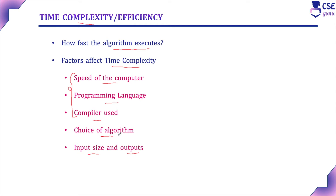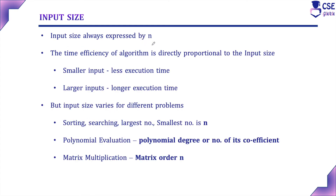There are different algorithms to solve the same problem. The programmer has to analyze the different algorithms available and choose the best one. Input size is the main factor that affects time complexity; the other factors do not have a major impact. The only factor that greatly influences time complexity is the input size, expressed by n. The time efficiency of an algorithm is directly proportional to n — if n is smaller, the algorithm takes less time; if n is larger, it takes longer.